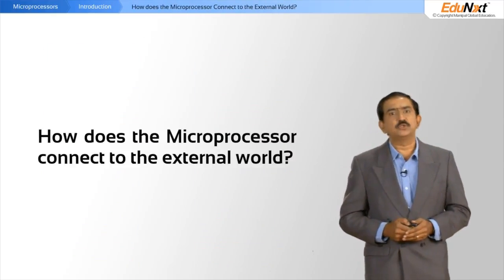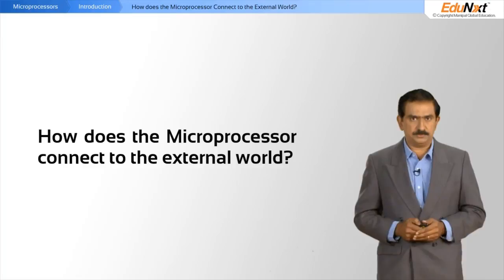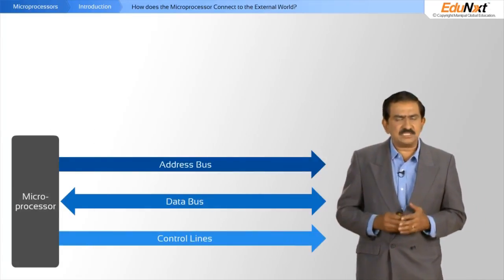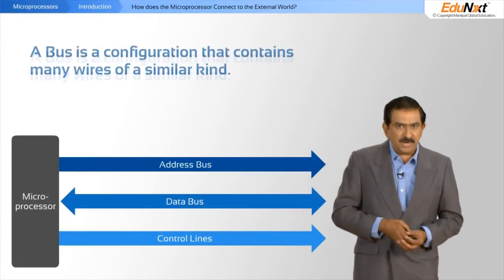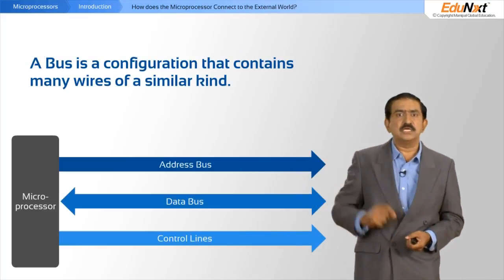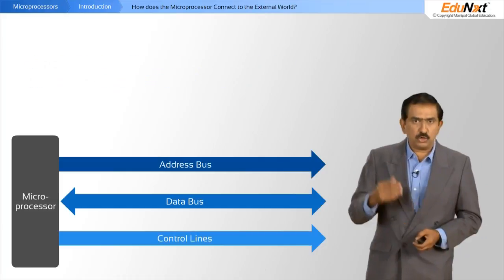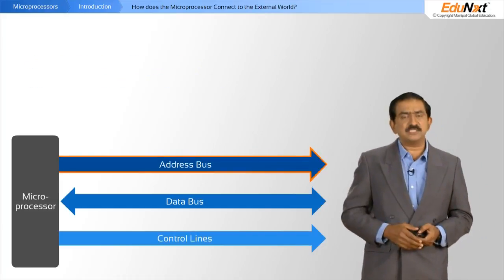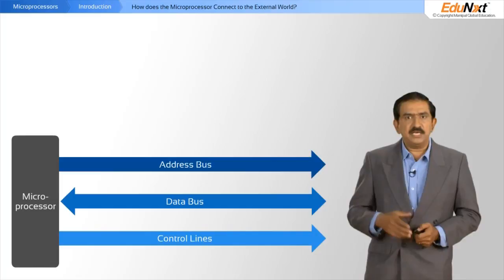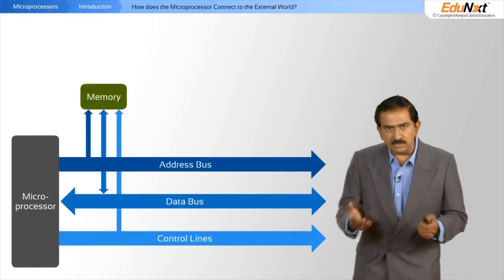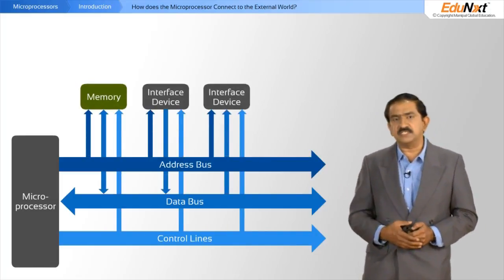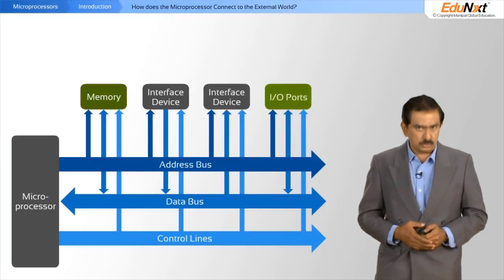So how does the processor connect to the external world? It has three kinds of buses that come out. A bus is a configuration that contains many wires of a similar kind. So you have the address bus, the data bus, and a control bus. Each of these are connected to either memory devices, various interface devices, or to I/O ports.